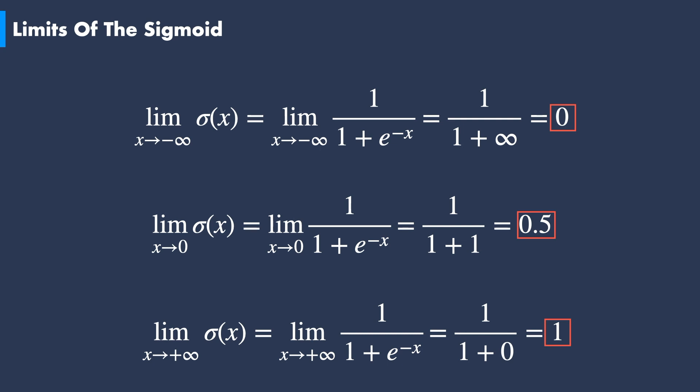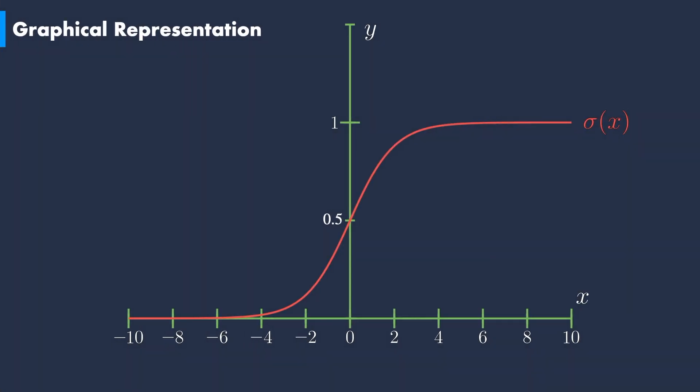Now that we know the profile of the limits of the sigmoid function, let us go back to the graphical representation. We can see that 1 and 0 are the upper bound and the lower bound respectively. While 0.5 is the value that the sigmoid function takes when x is equal to 0. We say that the sigmoid function has a squashing effect, meaning that for any value that x takes, the value of the sigmoid function is always between 0 and 1.